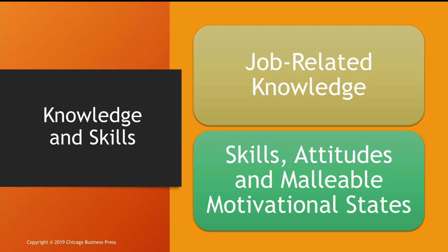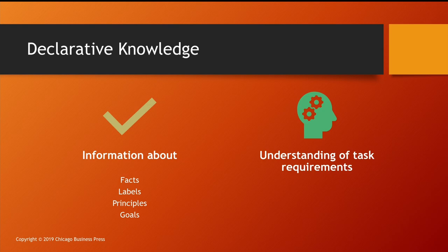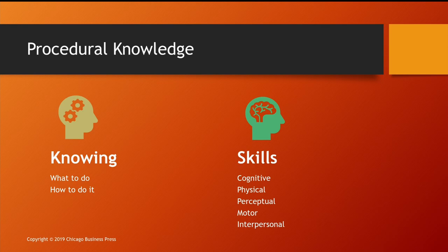Declarative knowledge is constituted by two main components: the information component and the understanding of task requirement component. The information component covers facts, labels, principles, goals, etc. Together with the understanding of task requirements, this gives us declarative knowledge. Procedural knowledge is about knowing what to do and how to do it, relying on certain skills of the worker.